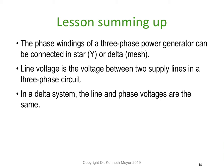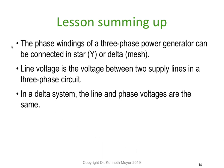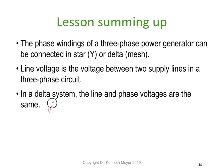Let's sum up our lesson on delta — both parts A and B. First, the phase windings of a three-phase power generator can be connected in star or delta. The voltage between the supply line and the three-phase circuit: in a delta system the line and phase voltages are the same. We express that as: volts phase equals volts line.